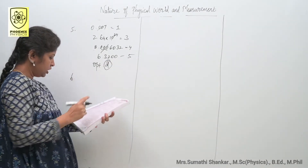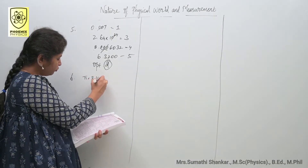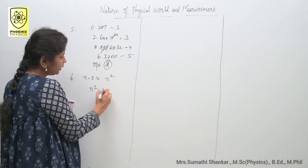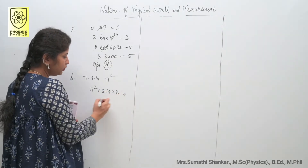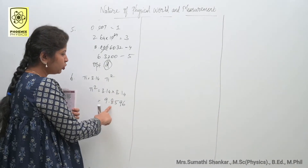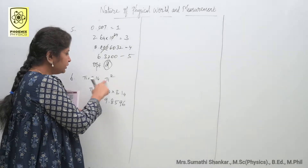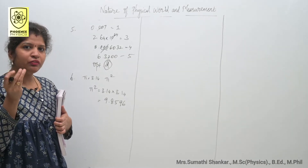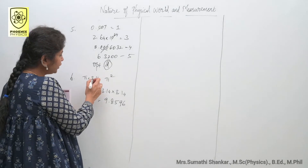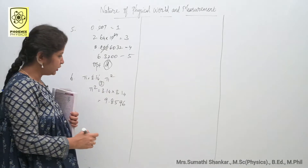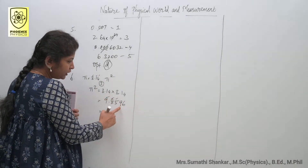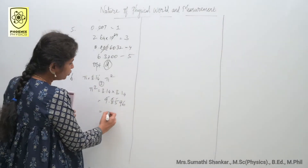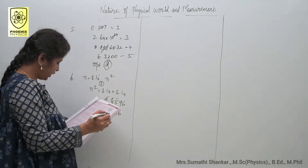Question six: if π equals 3.14, find the value of π². Multiplying 3.14 by 3.14 gives 9.8596. Since these are multiplication, we count the least number of significant figures, which is 3. The third decimal digit is 9, which is greater than 5, so we round up. The answer is 9.86. Option C is correct.